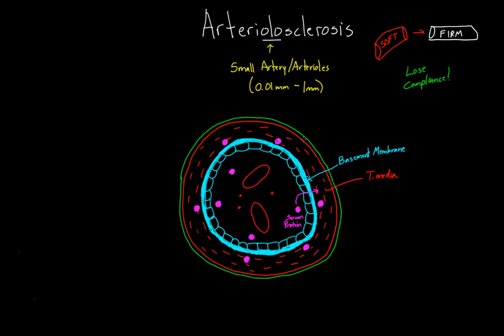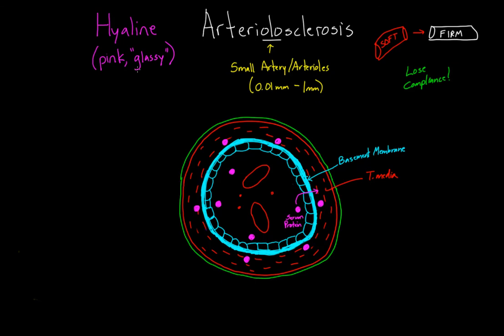That is the process. If you look under a microscope and you start seeing pink protein in the tunica media, you can be fairly certain that you have arteriolosclerosis happening. They even call it hyaline — you might see the term 'hyaline arteriolosclerosis.' Hyaline refers to the fact that under a microscope, this vessel is going to look like it has some pink, glassy stuff in the tunica media that doesn't belong there. That pink, glassy stuff is the serum protein. The term hyaline is really just descriptive, and arteriolosclerosis is the process.